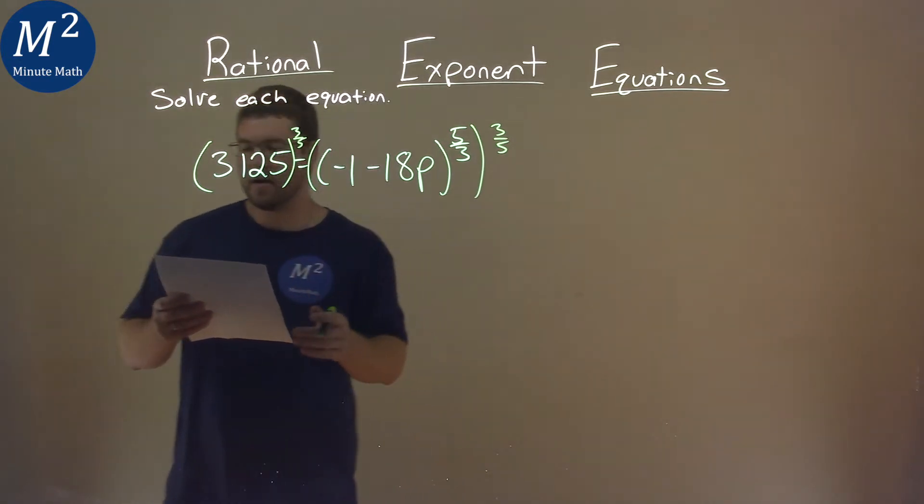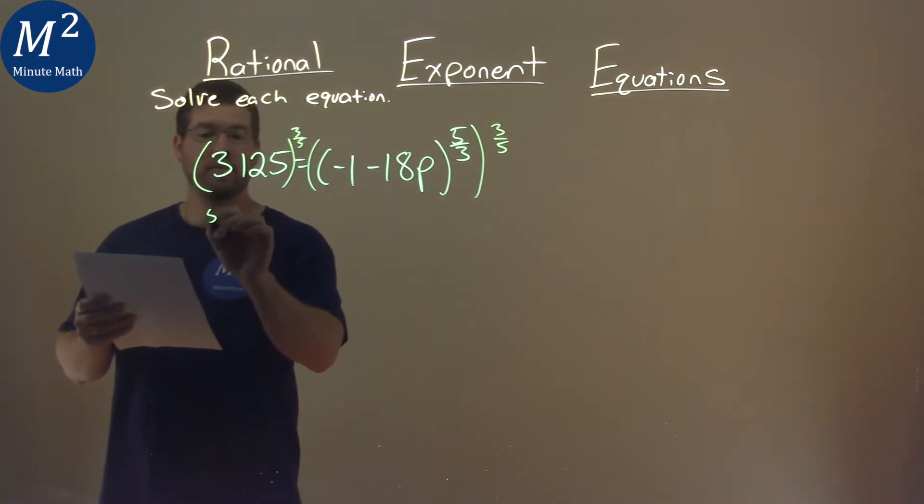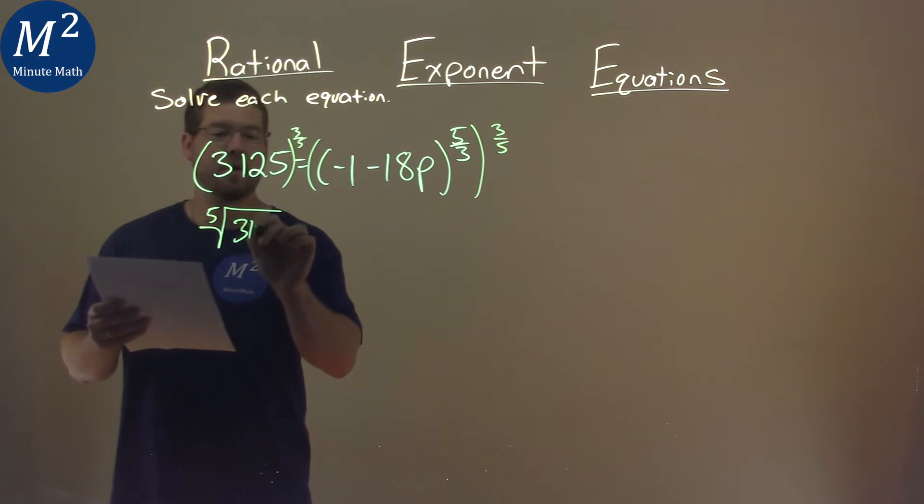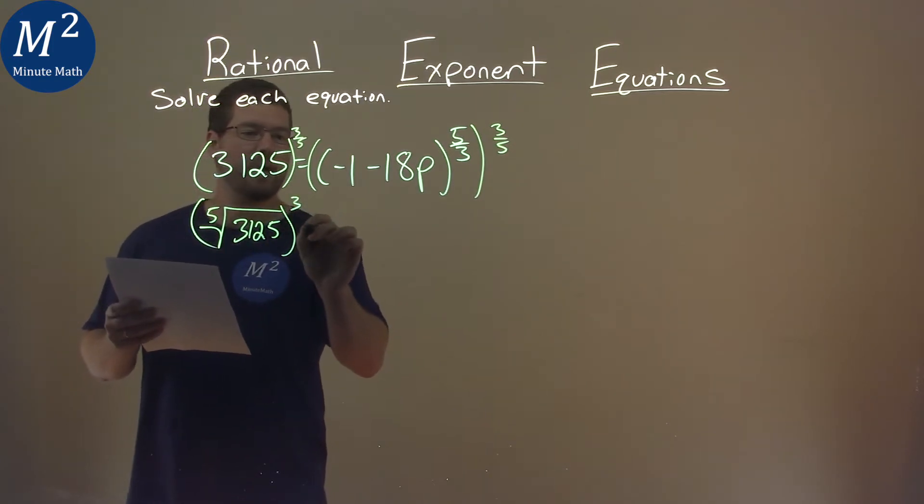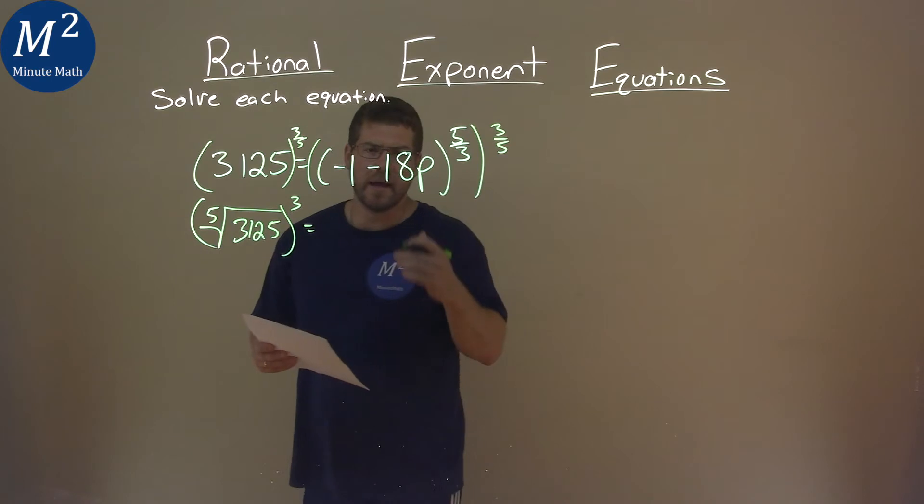The left-hand side becomes just the fifth root of 3125, all of that raised to the third power. But what about the right-hand side?